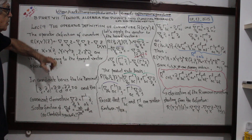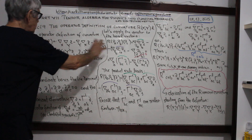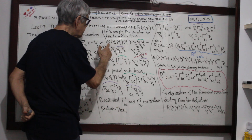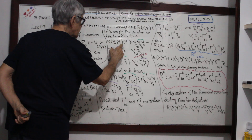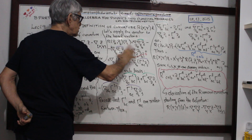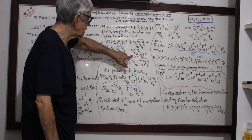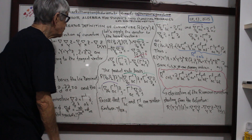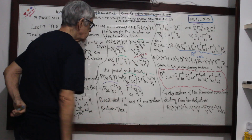Now let's apply this operator to only the basis vectors. I substitute capital X by ∂/∂x^a, ∂/∂x^b, and ∂/∂x^c. I just use the definition and substitute over there. Remember that the Lie bracket is zero, as I pointed out. So applying the definition leads to this relation.